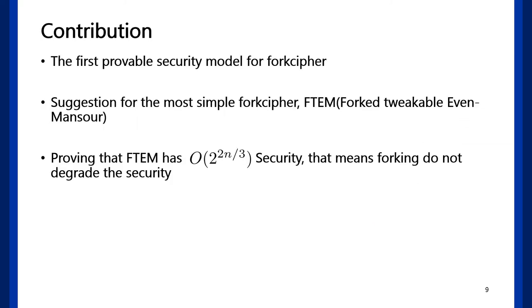From here, we started our research. Forkcipher was new cryptographic primitive. Therefore, there was no research on forkcipher with provable security perspective. We set provable security model for forkcipher and also the most simple forkcipher structure, FTEM - forked tweakable even-Mansour. And we proved FTEM has two-thirds of n-bit security, which means forking does not degrade the security.